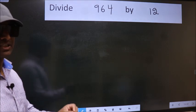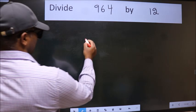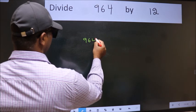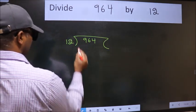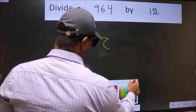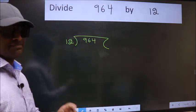But before that, we should frame it in this way. 964 here. 12 here. This is your step 1.